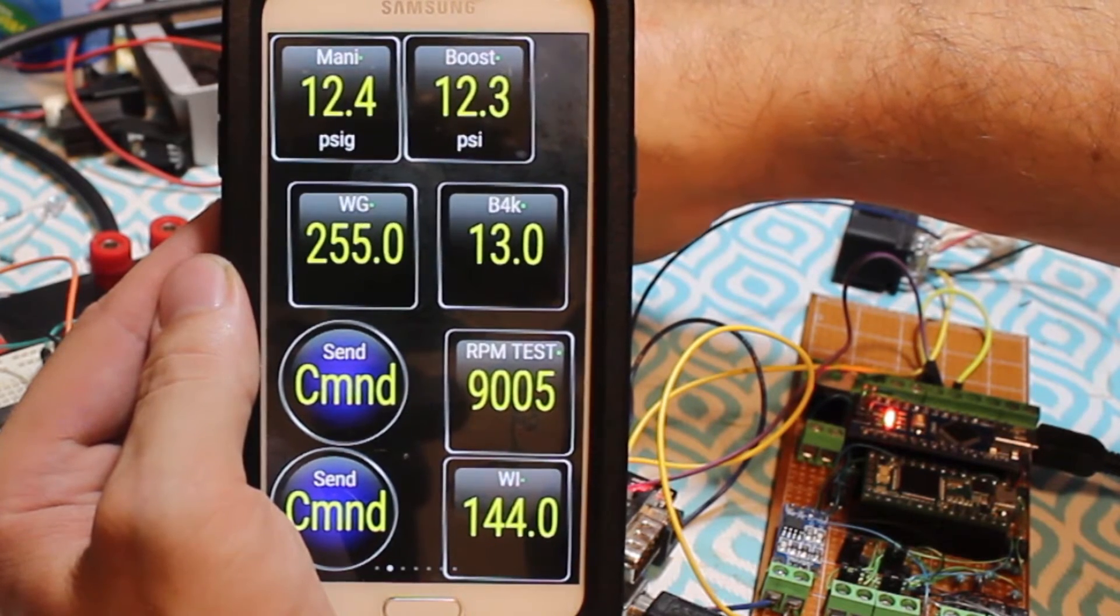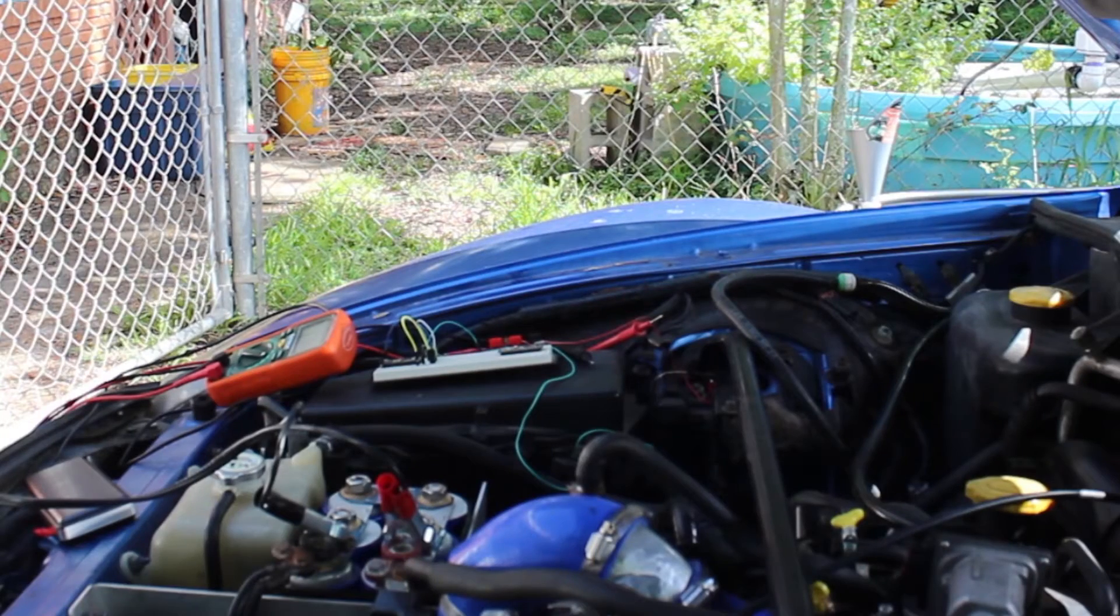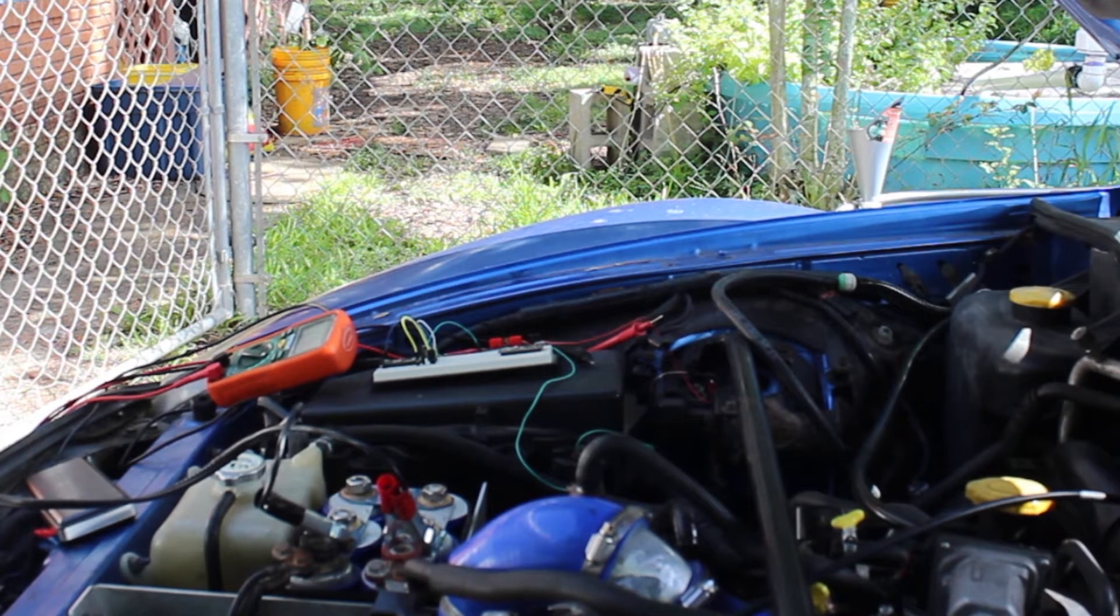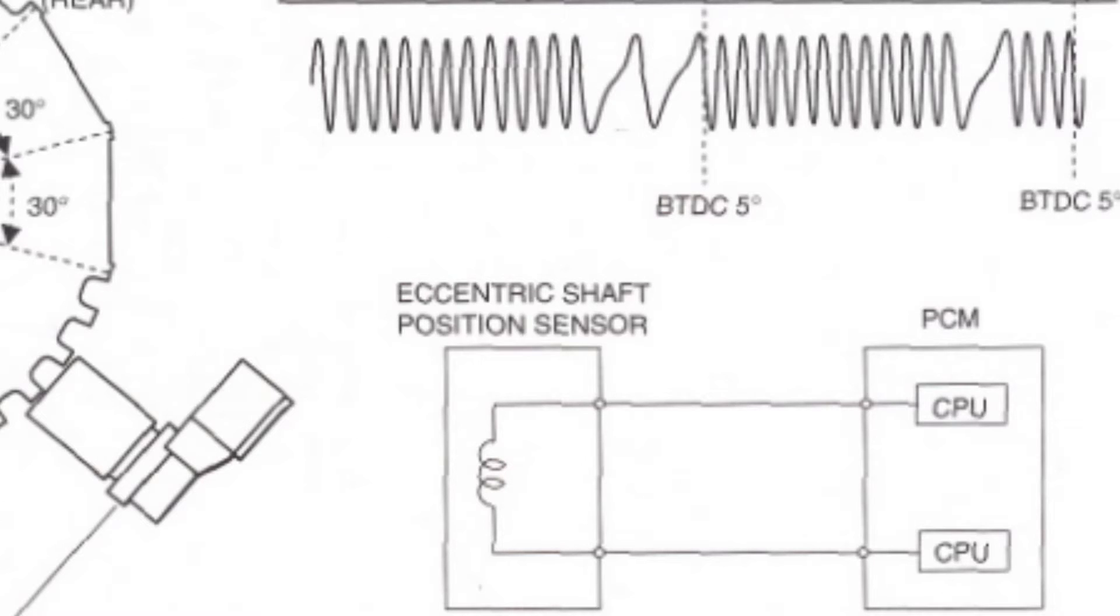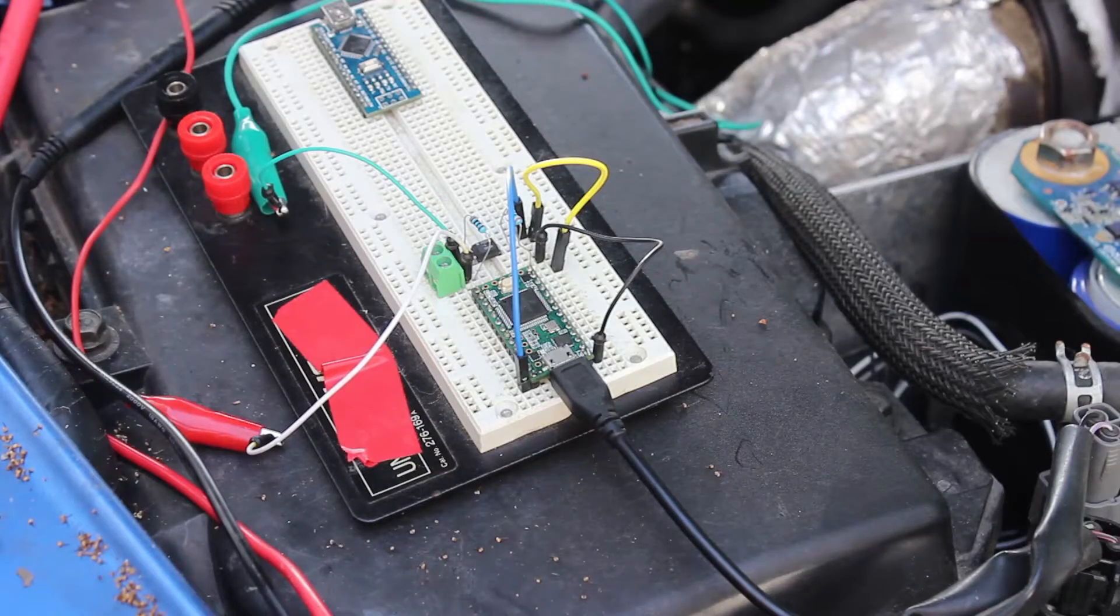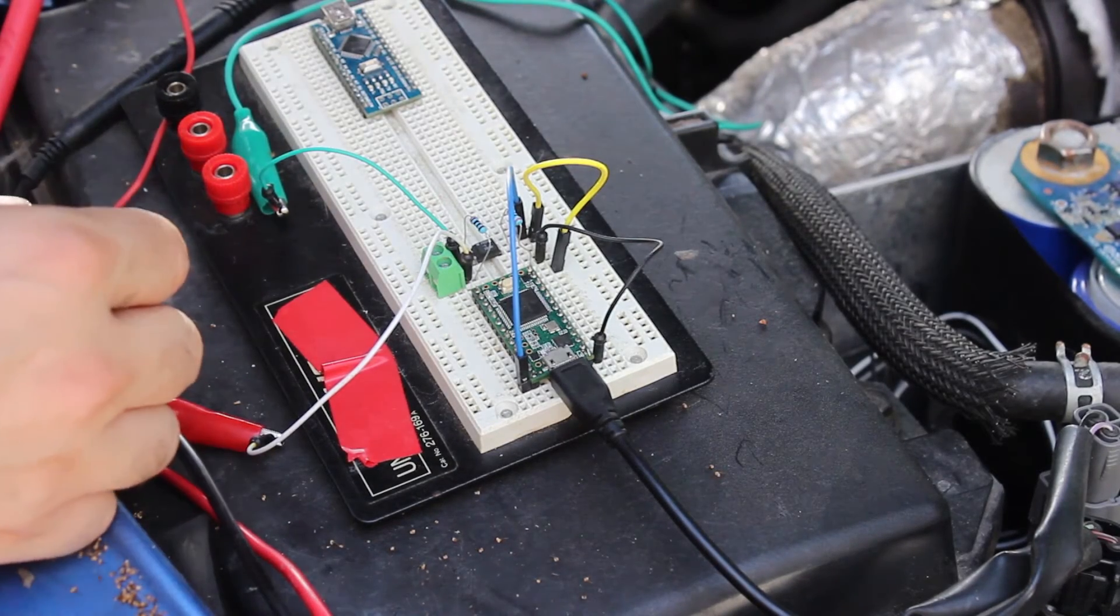My first attempt to read eccentric shaft position was using a digital input with a large resistor. That failed because the signal is an AC pulse and a bit noisy. The sensor itself is a variable-reluctant sensor, and it's similar to an AC generator. Then I tried using something different, an opto-isolator. It worked great, but it's still technically not how you're supposed to do it.